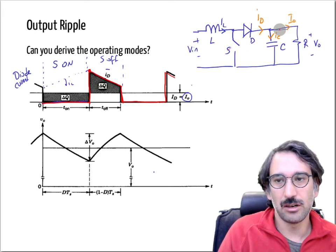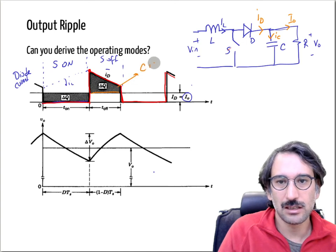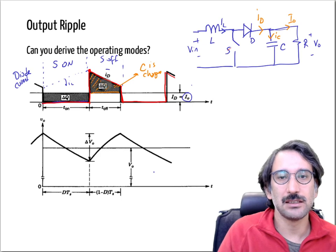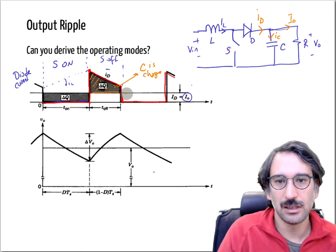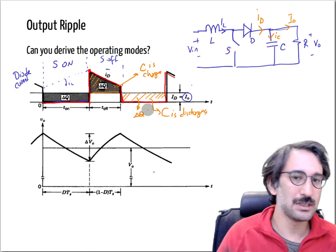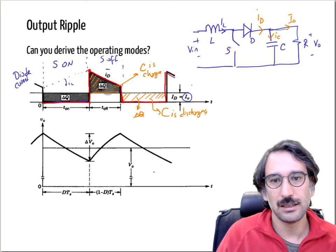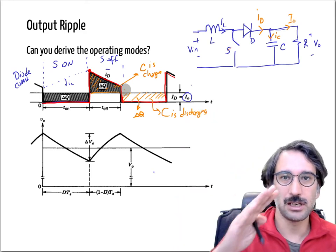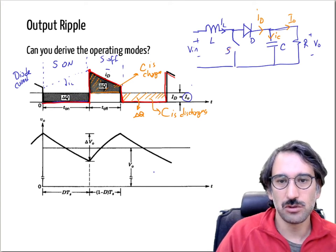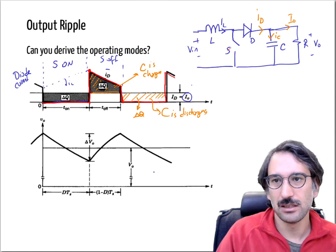The area where diode current exceeds output current represents the charge being sent to the capacitor. In the next portion of the cycle, the capacitor is discharging. At steady state, the amount of charge sent to the capacitor equals the amount taken out — otherwise the voltage would climb or fall. So the two charge areas are equal to each other.